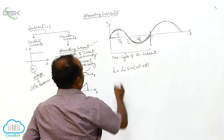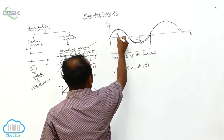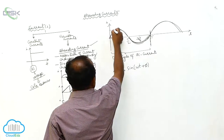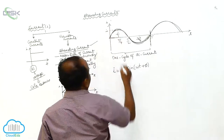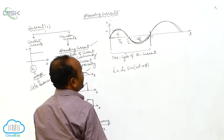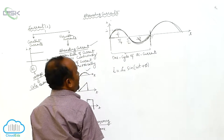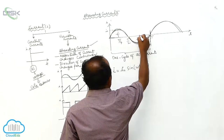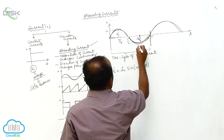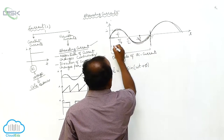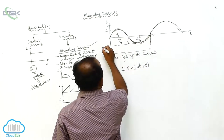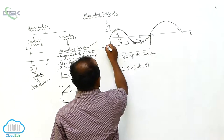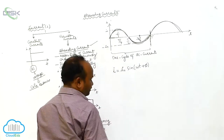After T by 4 seconds, there is a maximum current I₀. After 3T by 4 time, the current is minus I₀.